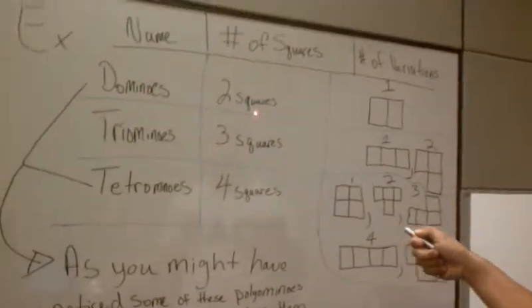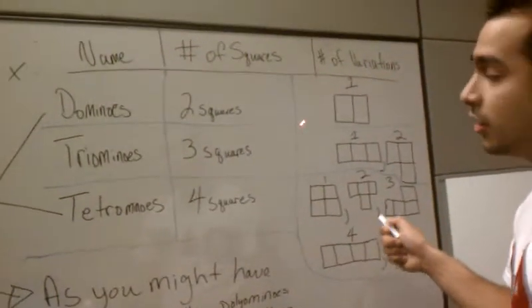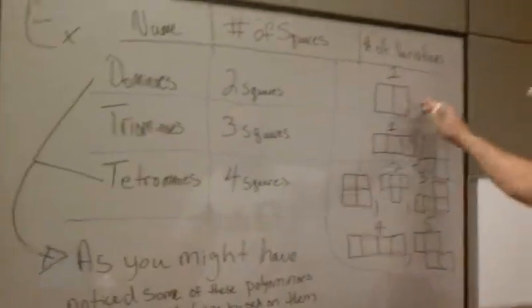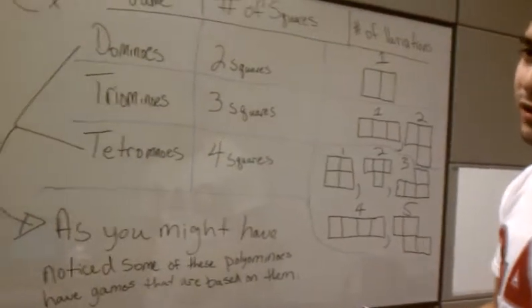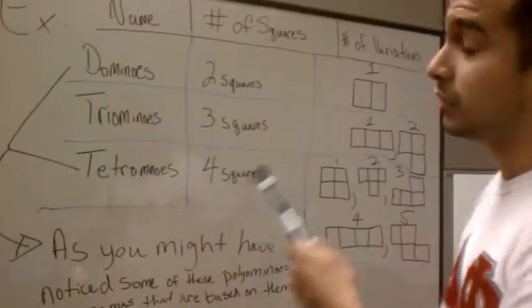For instance, dominoes with two squares only has one variation. You could also translate this or rotate it, but that's still the same variation, so it would still only be one.